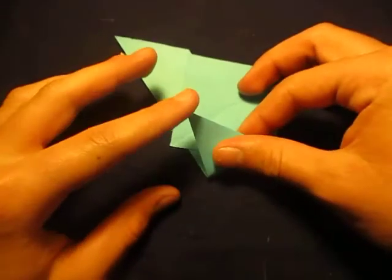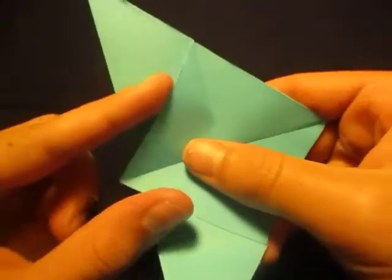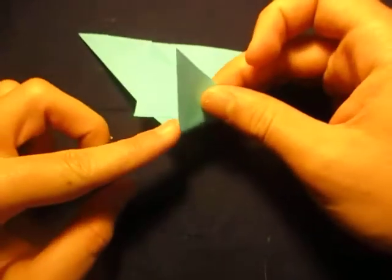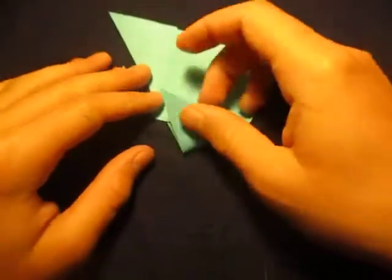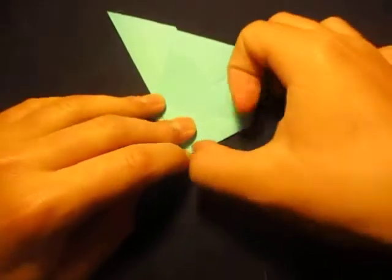Alright, now what we're going to do is we're going to fold this point to this edge right here. To this raw edge right here. Just like that. And make sure that this edge aligns with this edge right here. That's important.